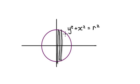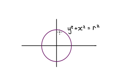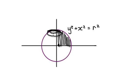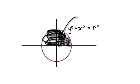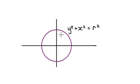Rather than summing all the cylinders from one side to the other, just sum up all the cylinders from 0 to r on one side only. When you sum up all the cylinders along here, it will give you half of the sphere. Then right at the end, multiply by two.